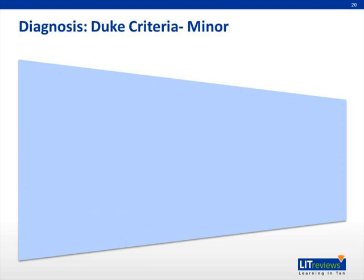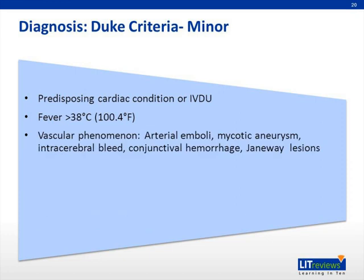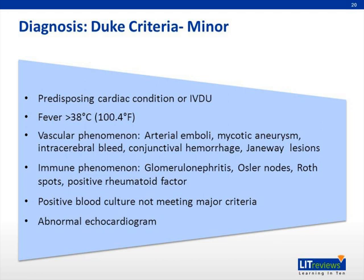Minor criteria include the following: 1) Predisposition, such as a predisposing heart condition or intravenous drug use. 2) Fever greater than or equal to 38 degrees Celsius. 3) One of the vascular phenomena, such as major arterial emboli, septic pulmonary infarcts, mycotic aneurysm, intracranial hemorrhage, conjunctival hemorrhages, or Janeway lesions. 4) One of the immunologic phenomena, such as glomerulonephritis, Osler's nodes, Roth spots, or rheumatoid factor. 5) Microbiologic evidence that does not meet major criteria. 6) Echo that is abnormal but not diagnostic.